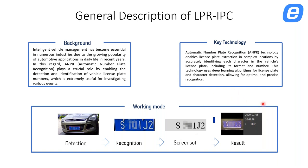On the user interface you can see the date, the time, and the license plate itself. You can also see if you have put a name on it — for example, 'office boss' or 'Jose' or any type of name. You will also see whether the plate is on the allow list or the block list.